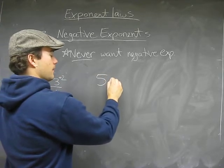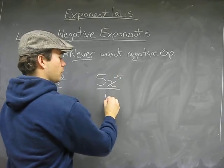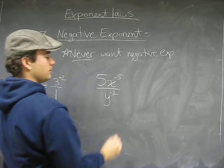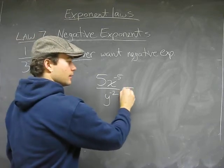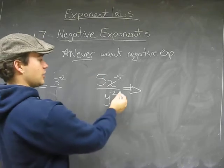Likewise, if I was given five x to the minus five over y to the minus two, I would change this because we never want negative exponents.